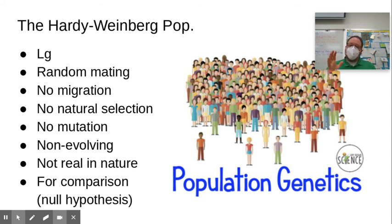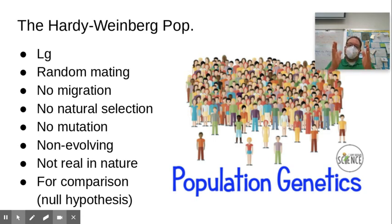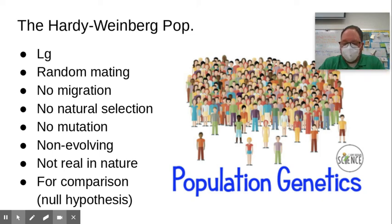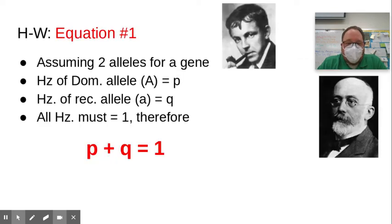You can take measurements of allele frequencies in a population at point one in time, then later at point two, check allele frequencies again and see the allele frequency changed — the population evolved. So Hardy-Weinberg is basically here for the basis of comparison. Hardy-Weinberg is named after these two guys who independently came up with the concept, so they're both given credit.